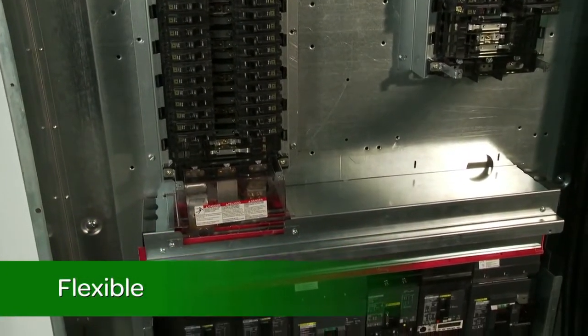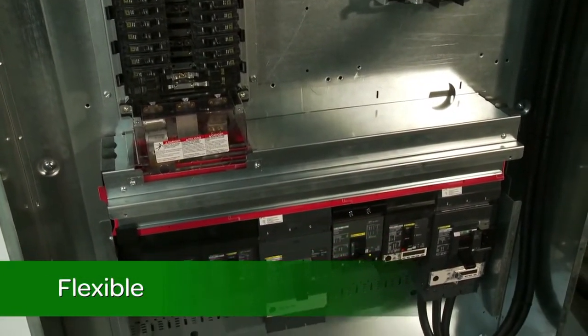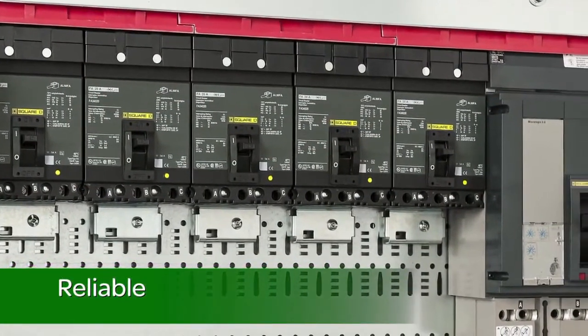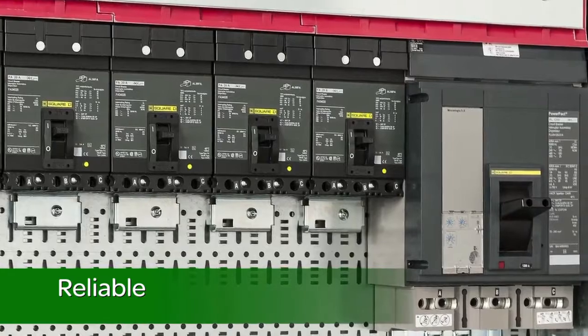The I-Line combo panel board is new, but it uses the same Square D boxes and breakers you've been installing for years. And the only tool you'll need to install these breakers is a screwdriver.